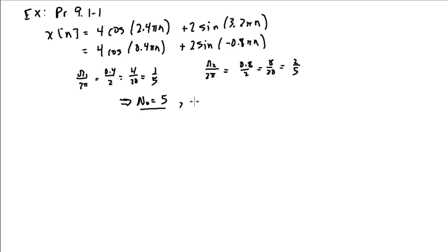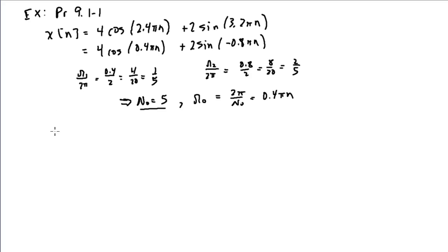The corresponding fundamental frequency is 2π over n₀. We'll see that the 0.8π n term is the second harmonic, while 0.4π is the first harmonic frequency. Instead of calculating the Fourier series using the defining summation, we'll use Euler's formula to expand these two discrete time sequences and determine the Fourier series coefficients by inspection.